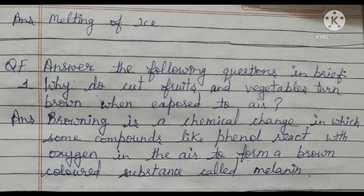Question F: Answer the following questions in brief. Question 1: Why do cut fruits and vegetables turn brown when exposed to air? The browning is a chemical change in which compounds like phenol, present in fruits and vegetables, react with oxygen in the air to form a brown-colored substance called melanin. The browning is only due to the formation of melanin.